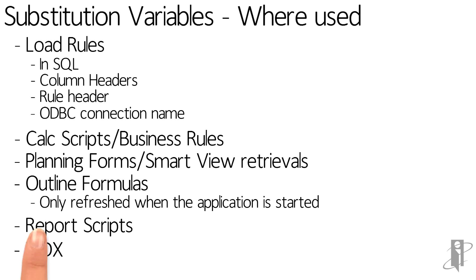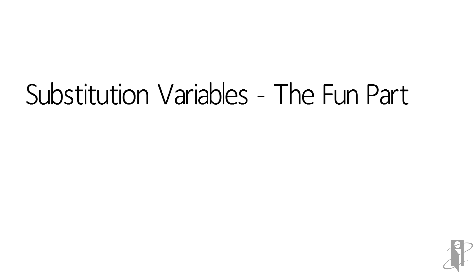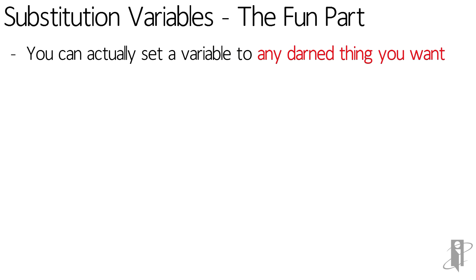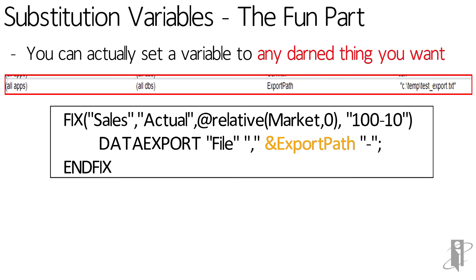When we save the outline it will also save the substitution variables. We can use them in report scripts and in MDX. For example, if I wanted to do a partial data clear out of an ASO cube, I would write an MDX script to clear the current year and current period. And here's the fun part: you don't have to just use a substitution variable for a member name — you can use it for anything you want.